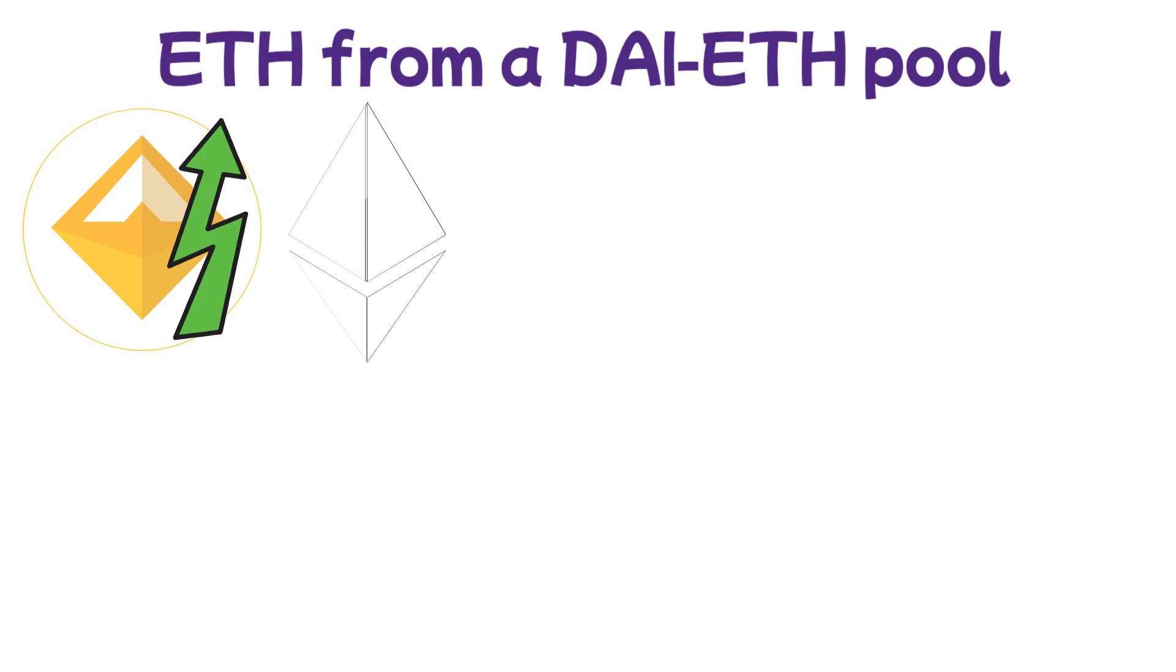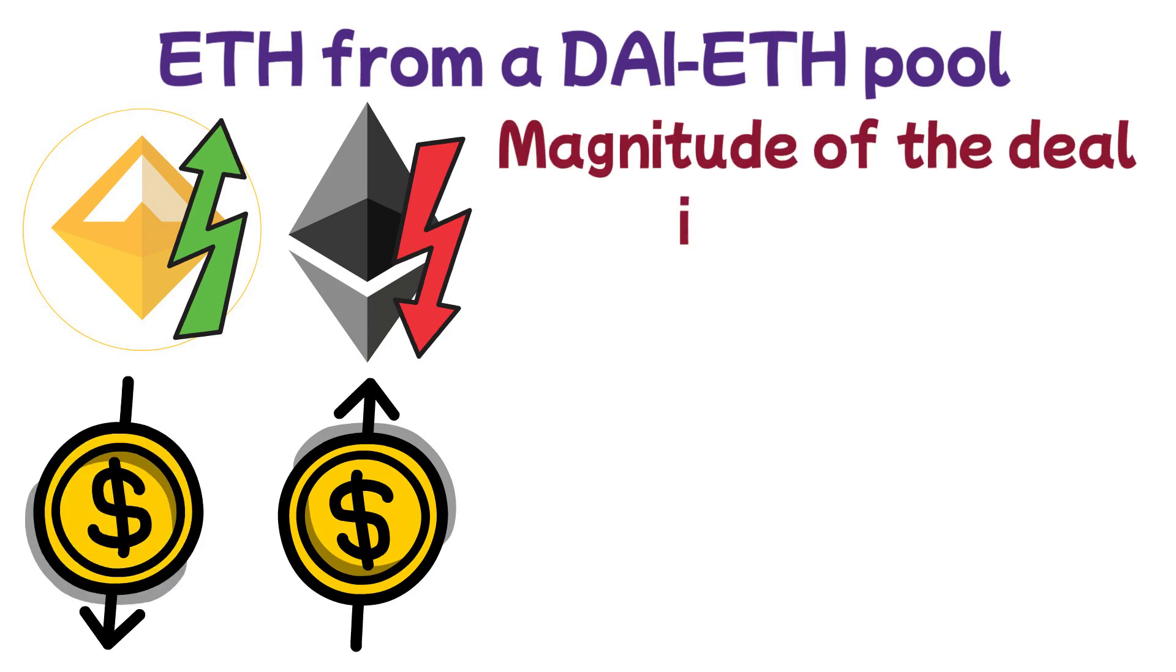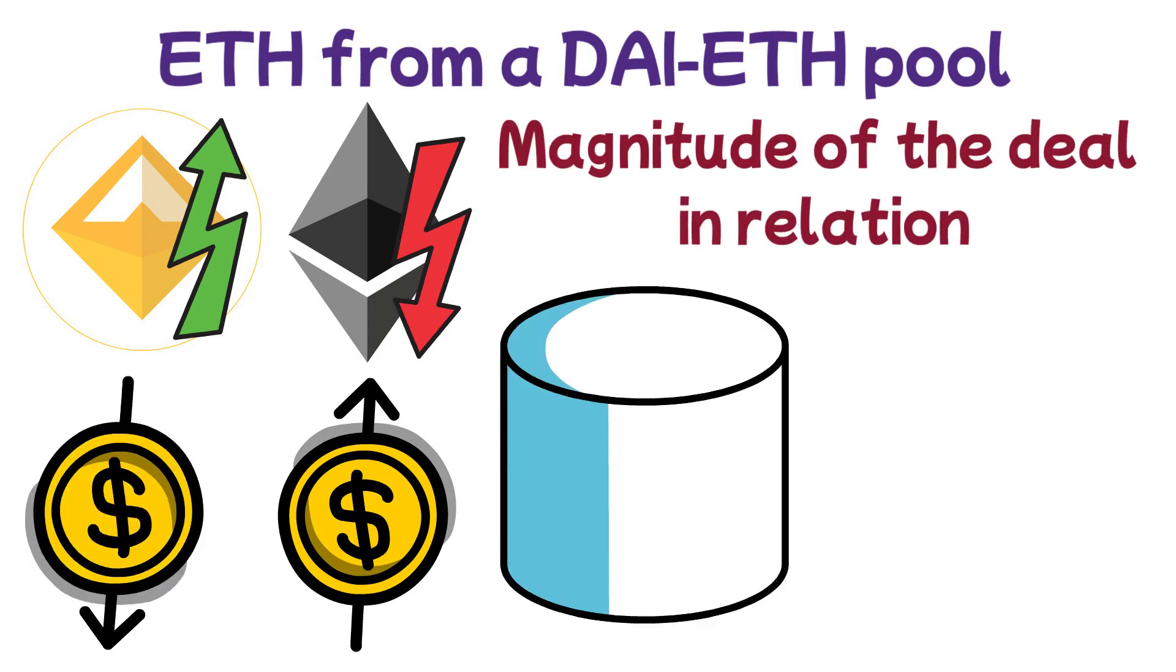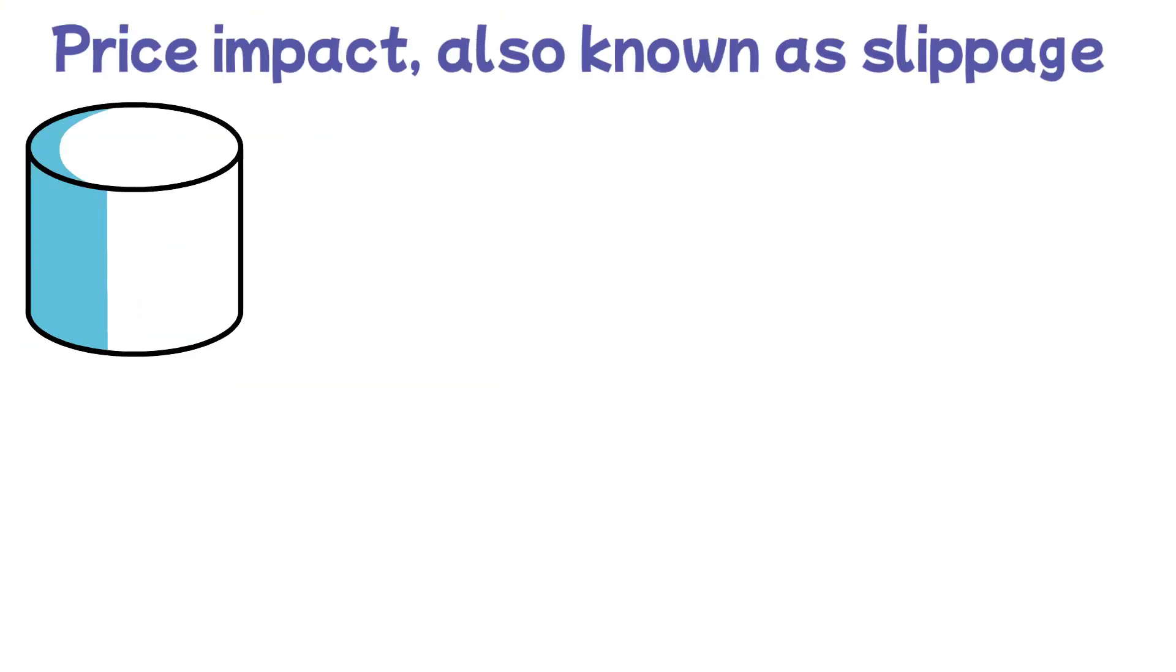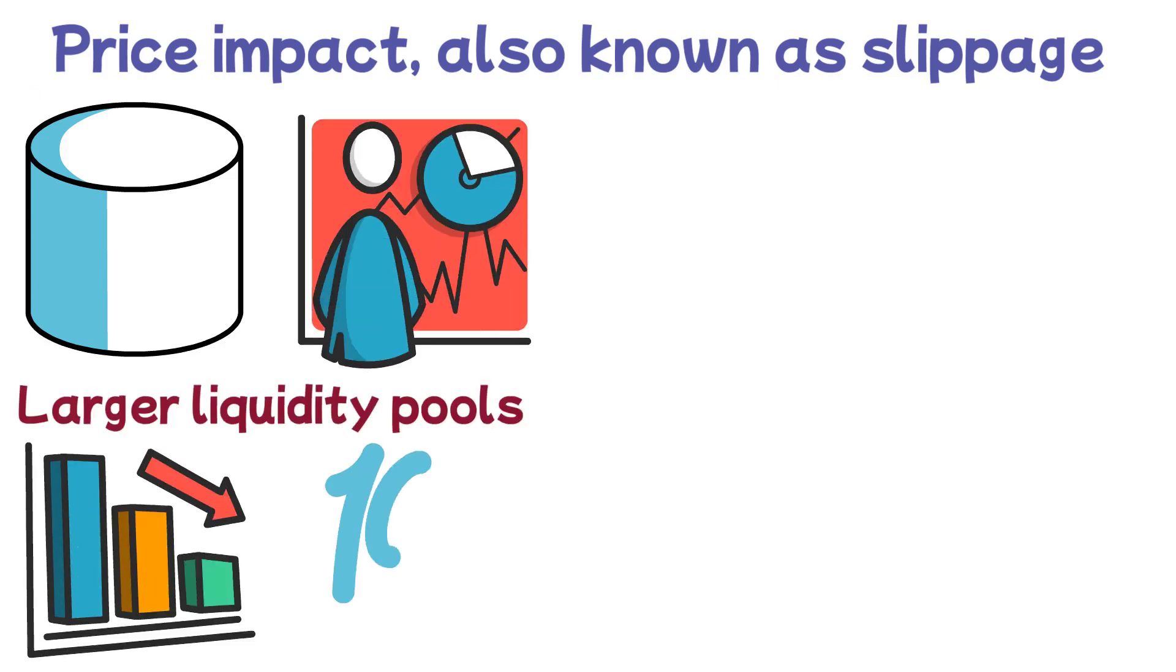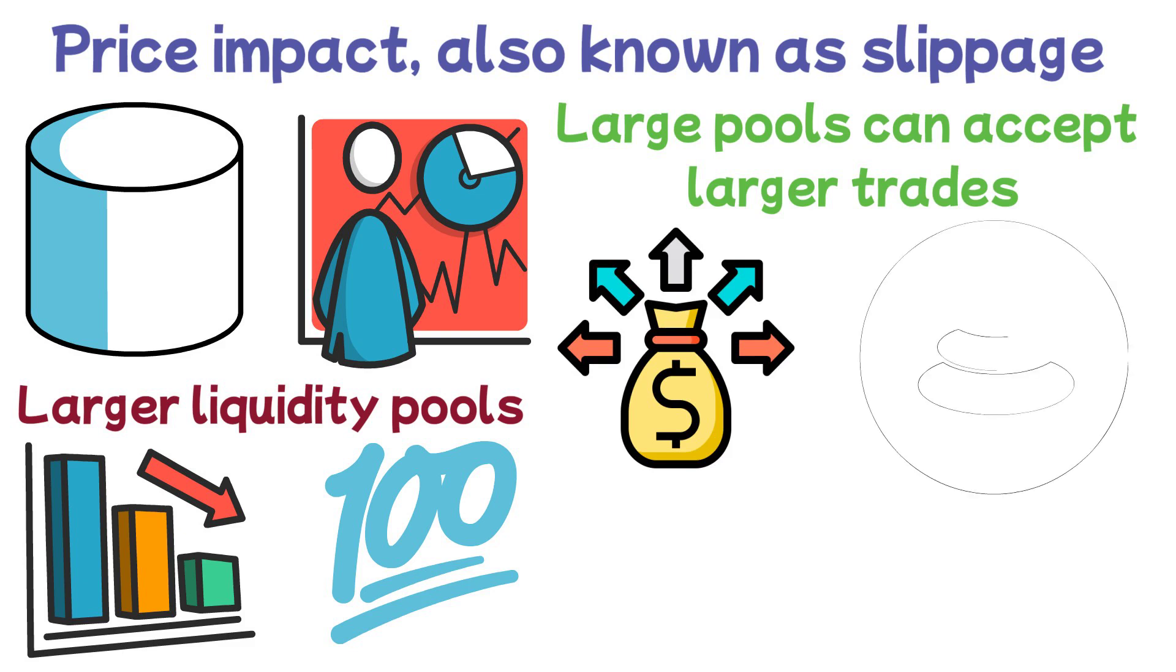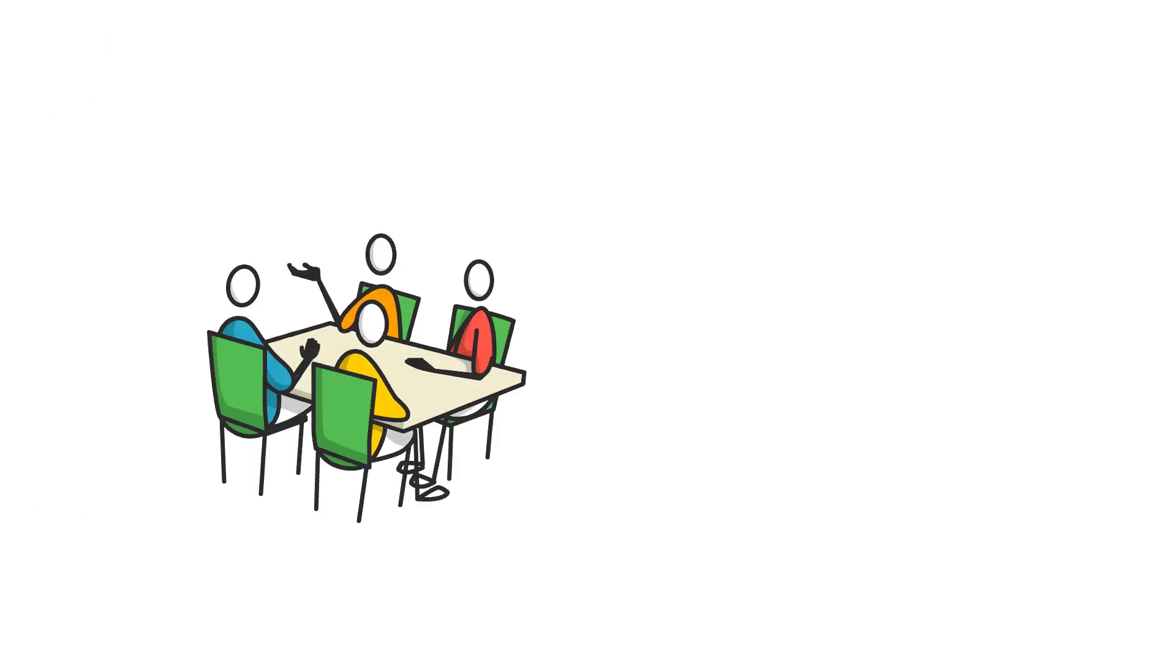Therefore, if someone purchases ETH from a DAI-ETH pool, they increase the supply of DAI and decrease the supply of ETH, which raises the price of ETH and lowers the price of DAI. The magnitude of the deal in relation to the size of the pool determines how much the price changes. The price impact, also known as slippage, is lessened by the size of the pool in relation to a trade. Because larger liquidity pools result in less slippage and a better trading experience, large pools can accept larger trades without significantly changing the price. For providing liquidity to certain pools, some protocols like Balancer began rewarding providers with additional tokens. We discussed this procedure known as liquidity mining in our yield farming video.